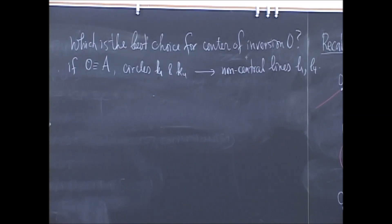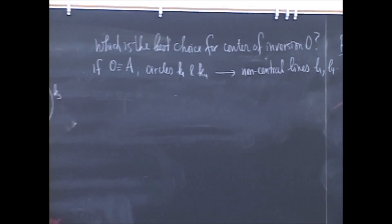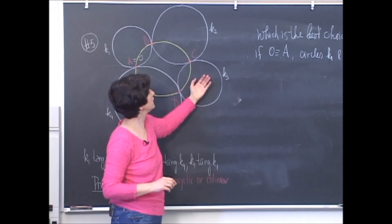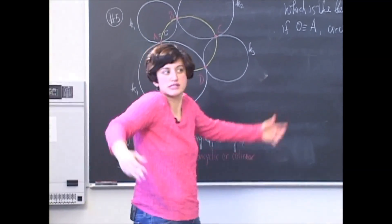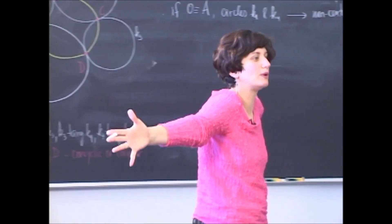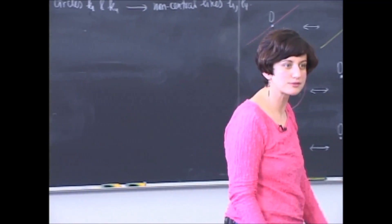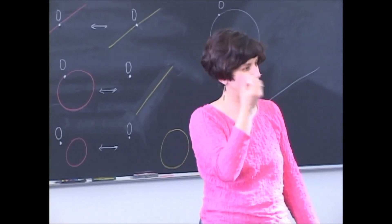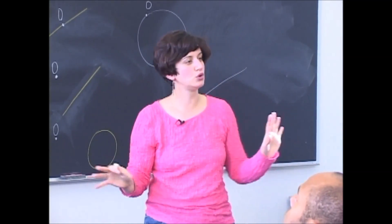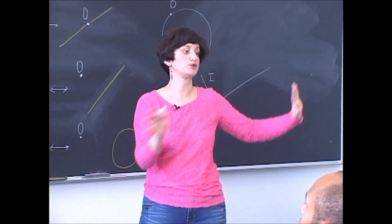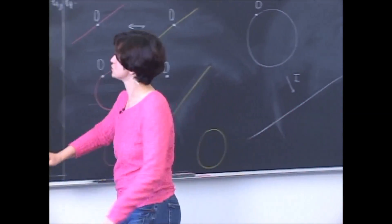Before I draw anything, tell me what happens to the other two circles. K2 and K3. Non-central circles. Well, we can't kill all the circles, because we can't find the point that lies on all of the circles, right? So two are killed, two are transferred into other circles.